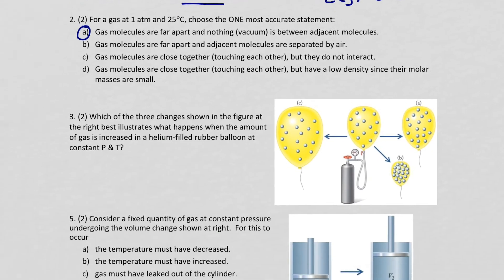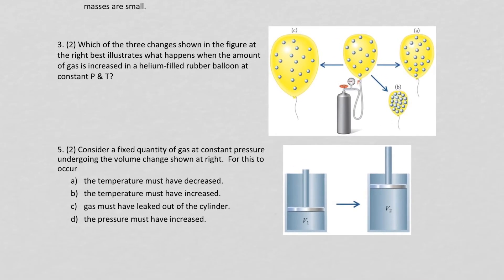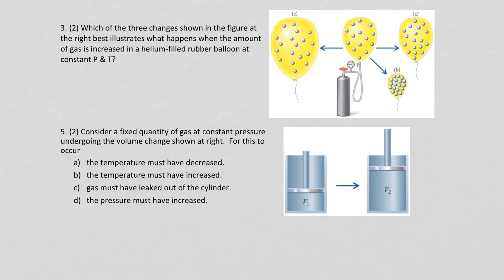Which of the three changes shown in the figure best illustrates when the amount of gas is increased in a helium-filled rubber balloon at constant P and T? So amount up. It just means that when gas is added, each mole of gas has 22.4 liters, so gas occupies its own individual amount of space. So really, we are looking for the balloon to get bigger.